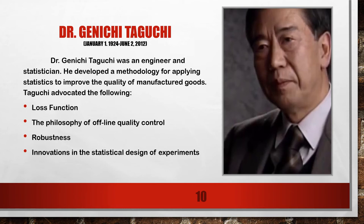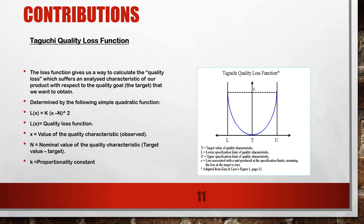In total quality management, Taguchi advocated for the following: loss function, the philosophy of offline quality control, robustness, and innovations in the statistical design of experiments.